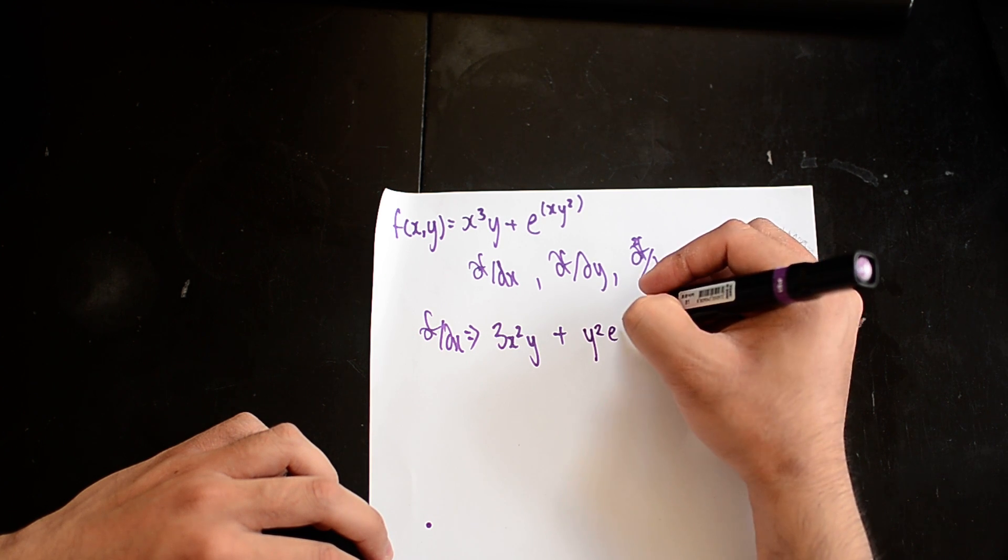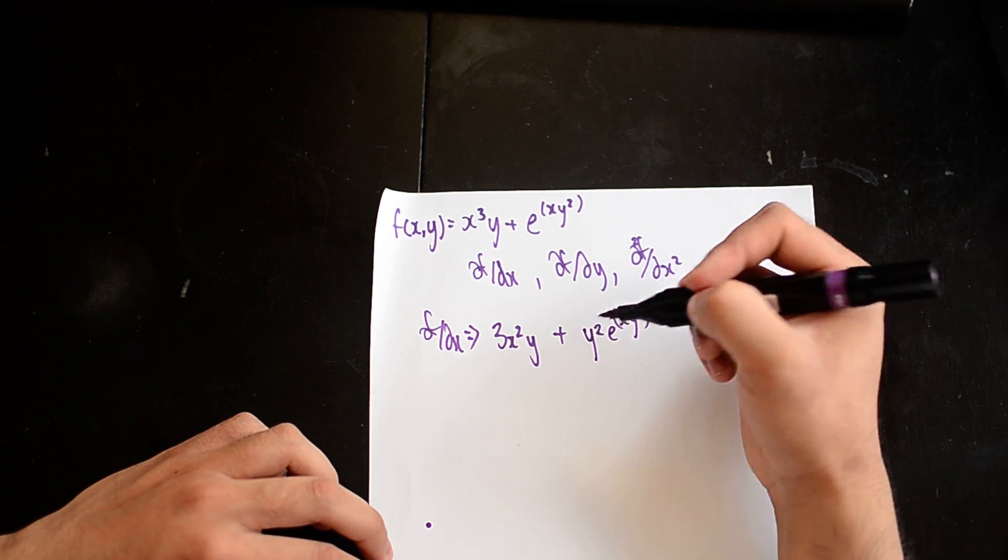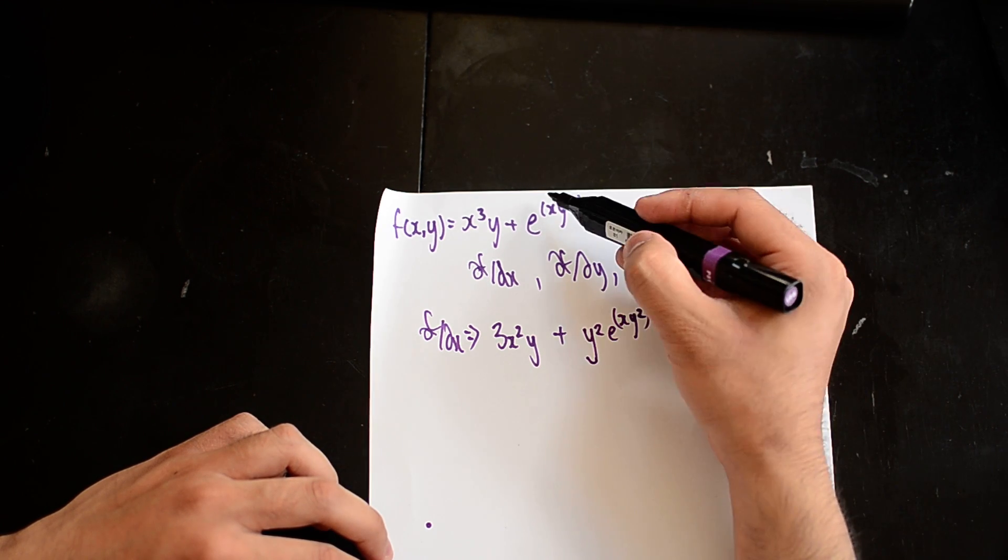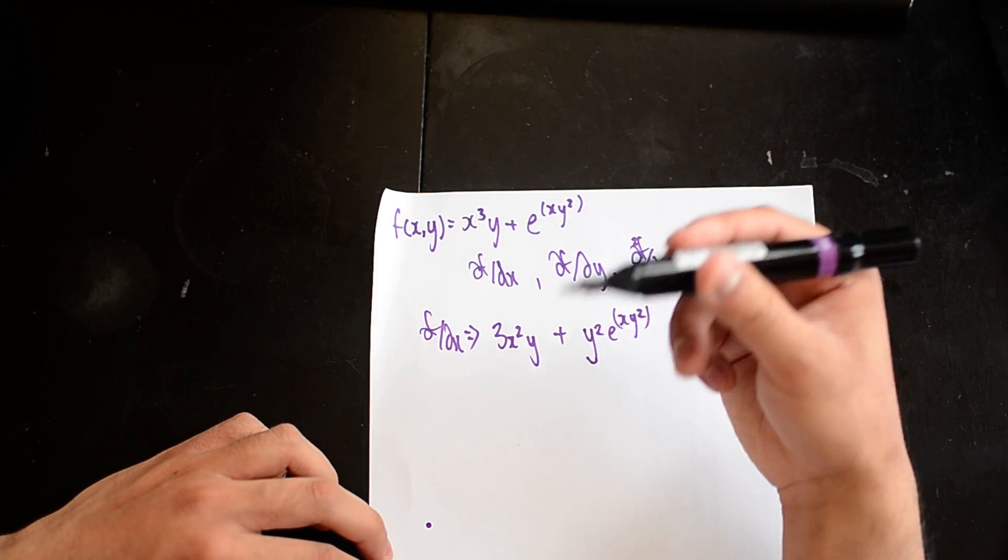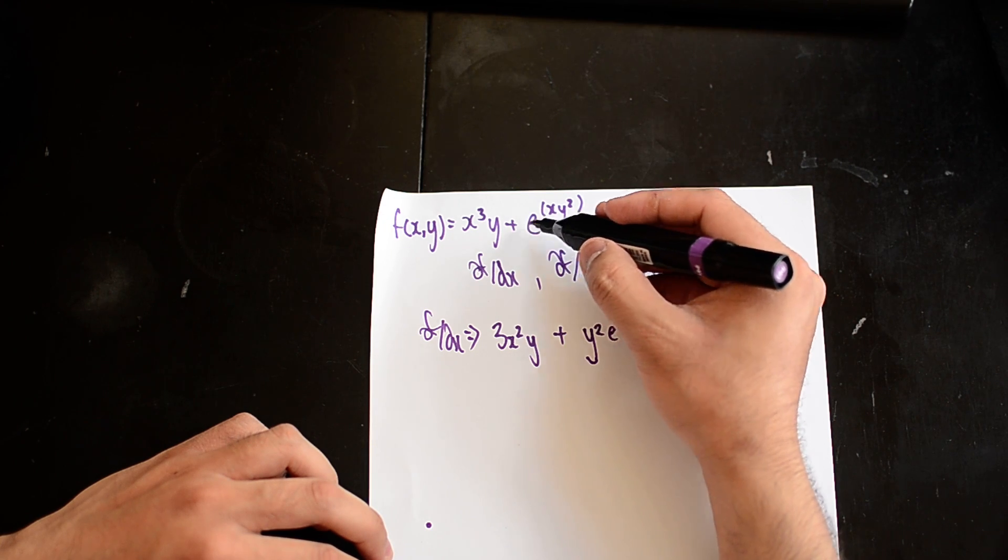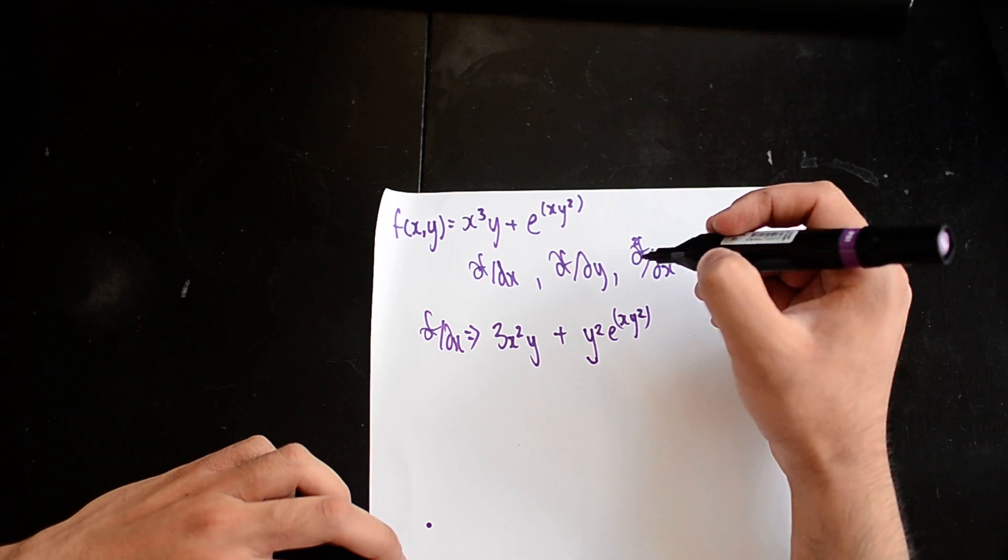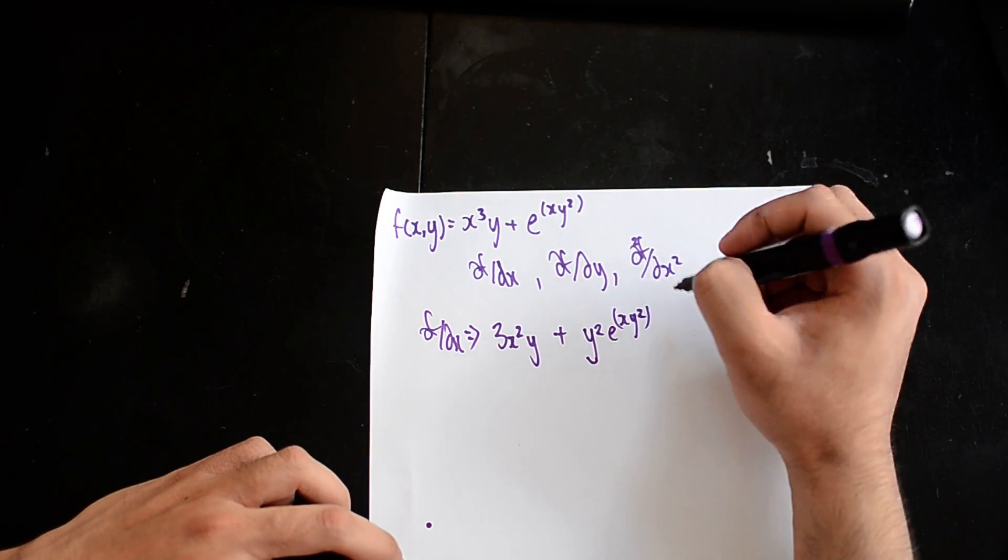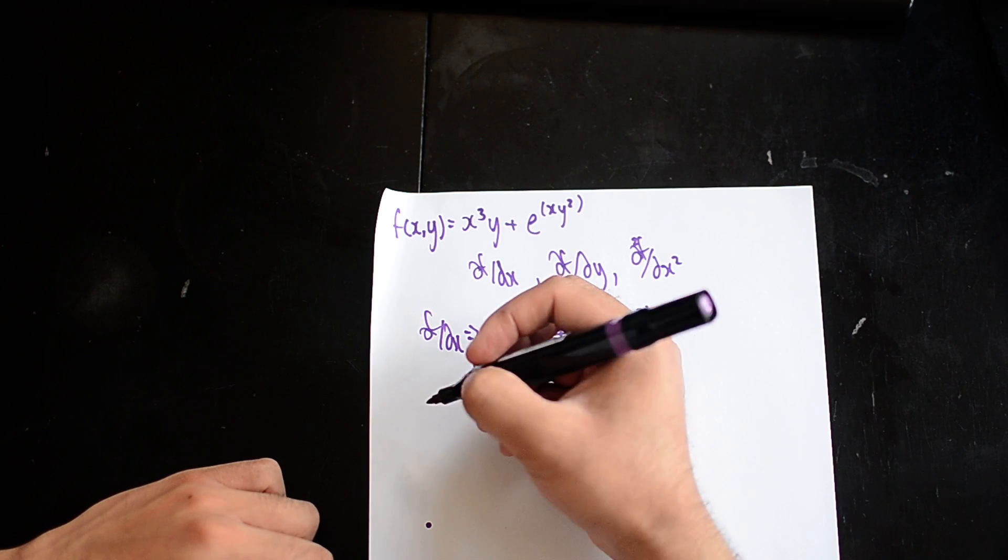And you get this as your answer by using the chain rule to differentiate e^t which becomes e^t. So now this is actually my df/dx. Now if I do df/dy.